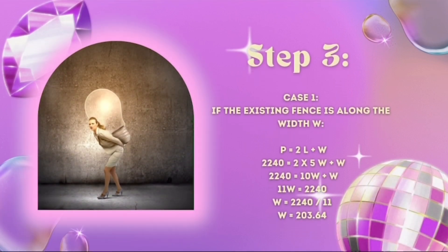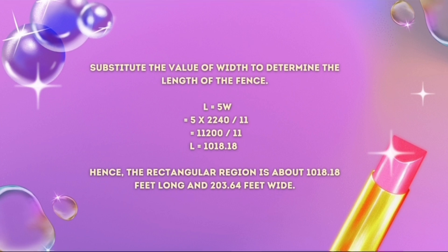Now we carry out the plan for case one. If the existing fence is enclosed along the width W, then P = 2L + W. We substitute the perimeter value of 2,240 feet and length as 5W, then solve to get W = 203.64. To compute the length, we substitute the value of W and the value of L = 1,018.18. Hence, the rectangular region is about 1,018.18 feet long and 203.64 feet wide for case one.